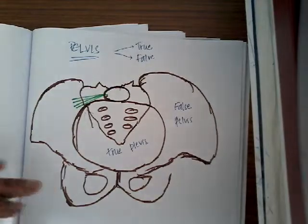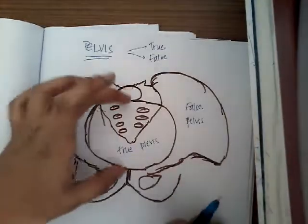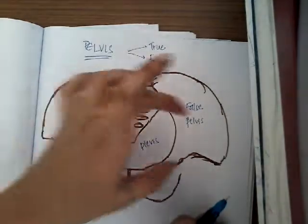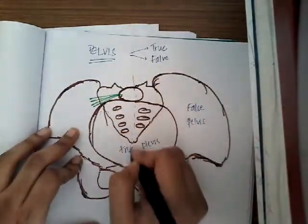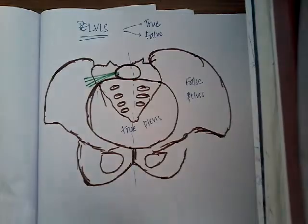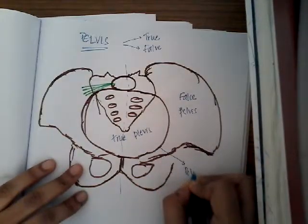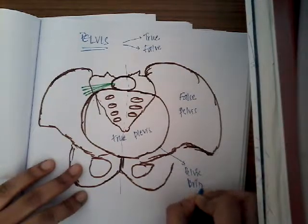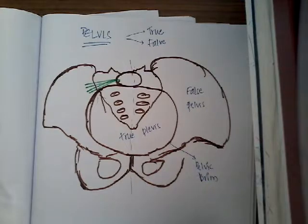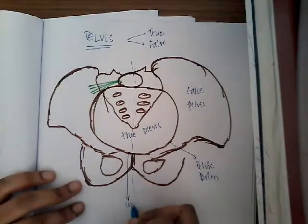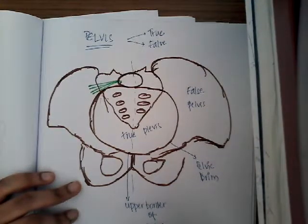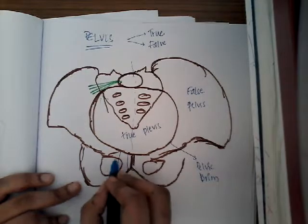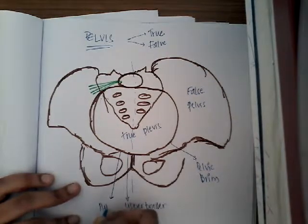The boundary that divides the true pelvis and false pelvis is called the pelvic brim. We will discuss the bony landmarks of the pelvic brim from anterior to posterior on one side. The pelvic brim contains the following landmarks: the first is the upper border of the pubic symphysis.